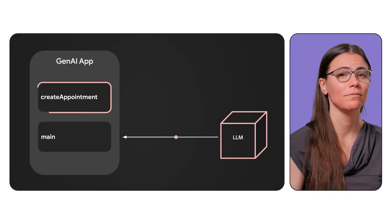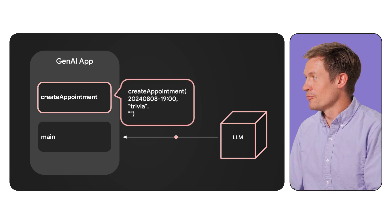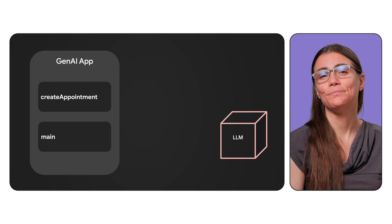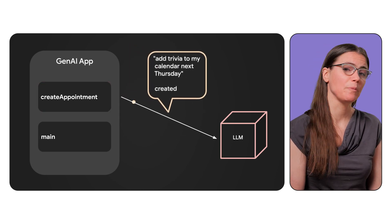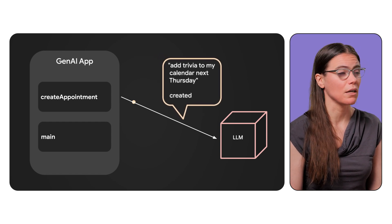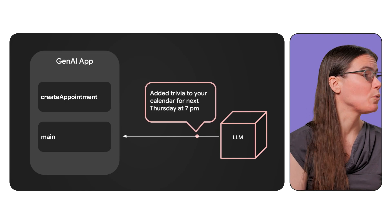As we said earlier, different frameworks and models handle this differently. Your code may need to parse the response from the LLM to determine if it's a function call at all, and then call the appropriate function. Or your framework could just take care of all of that for you. Either way, the function will get called. And the results of that function call are returned to the LLM with the context from the previous interaction — some frameworks take care of this for you. Finally, the LLM returns a response to the original prompt.